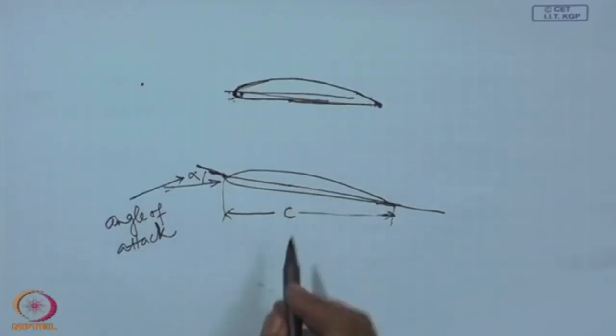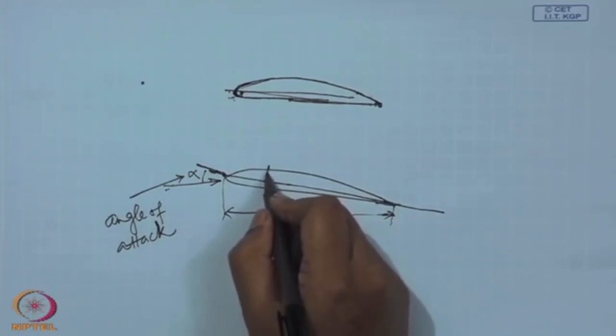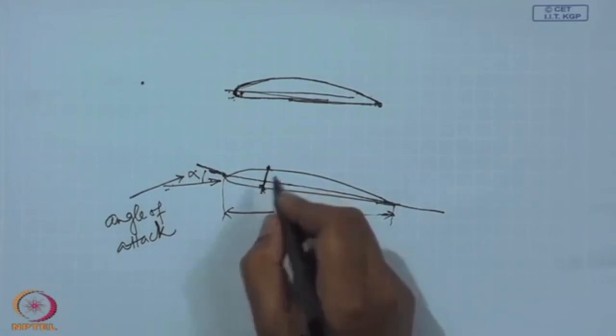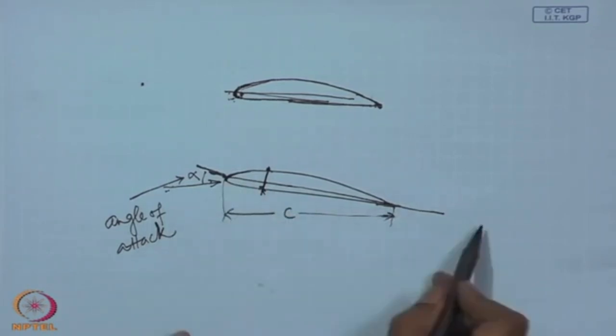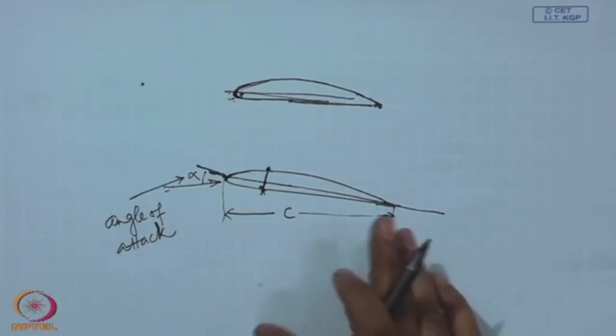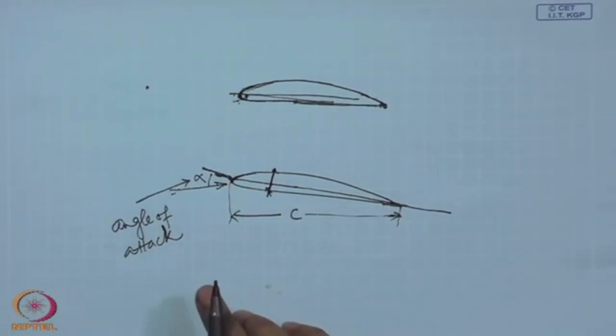Once we have the chord, if at any point on the chord we draw a perpendicular, it will intersect the two surfaces at two different points, and this distance is called the thickness. The thickness is small at the leading edge, increases as we move toward the trailing edge, reaches a maximum, then decreases to nearly zero. The maximum thickness point is usually somewhere between 25 to 50 percent chord — typically around 35 to 40 percent — for most airfoils used as wing cross sections.